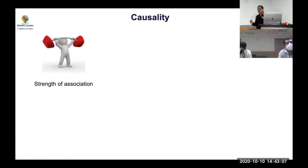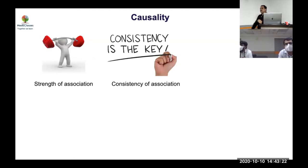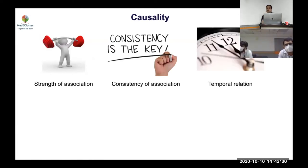When you want to prove causality — like smoking causing cancer — you need to fulfill various criteria. First is strength of association: there must be a strong association. Second is consistency: not just you, but 100 other centers should also show NAFLD is causing insulin resistance. Third is temporal relationship: you must prove that smoking happens before cancer, not the other way around.